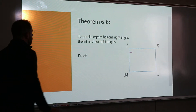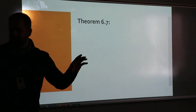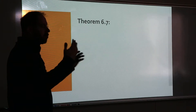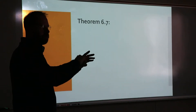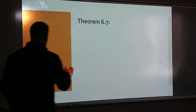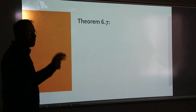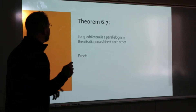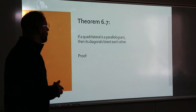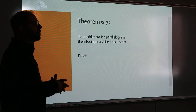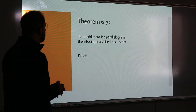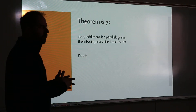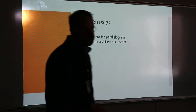Theorems 6-7 and 6-8 both deal with diagonals. Diagonals go across the interior of a quadrilateral and connect vertices that aren't already connected. Theorem 6-7: if a quadrilateral is a parallelogram, the diagonals bisect each other — they cut each other in perfect halves. It does not say the diagonals are equal in length; it says when they cross each other, they each get cut into two equal pieces.